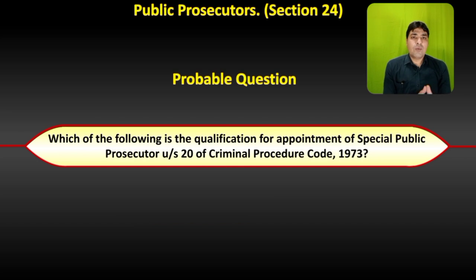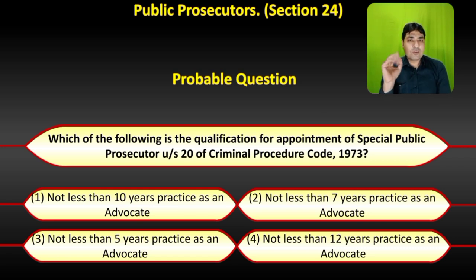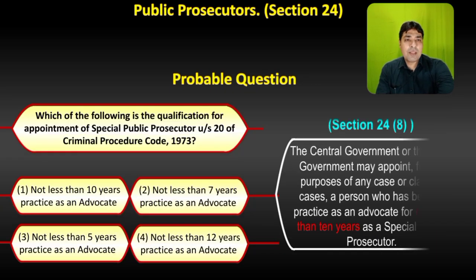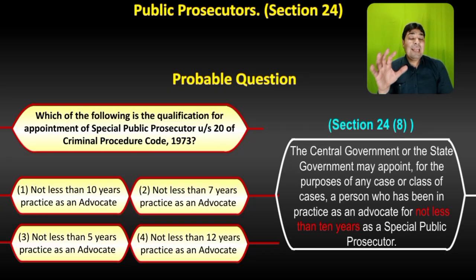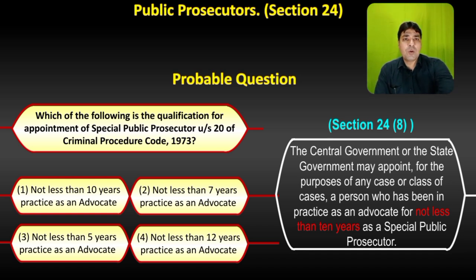Another probable question: What is the qualification for appointment of Special Public Prosecutor? Options: not less than 10 years; not less than 7 years; not less than 5 years; not less than 12 years. The correct answer is option 1 — not less than 10 years of practice as an advocate is required for appointment as Special Public Prosecutor.